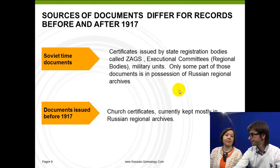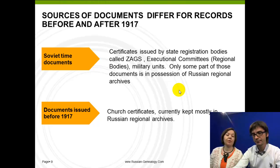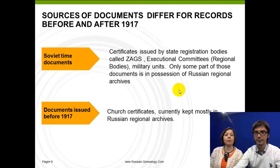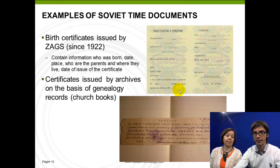Concerning documents issued before 1917, it is a little bit easier. Most of these documents are stored in Russian regional archives, and most likely you'll need to be checking church certificates. The key point is that you have to know where your relatives lived, where they were born, married, or died, and in which region of Russia.